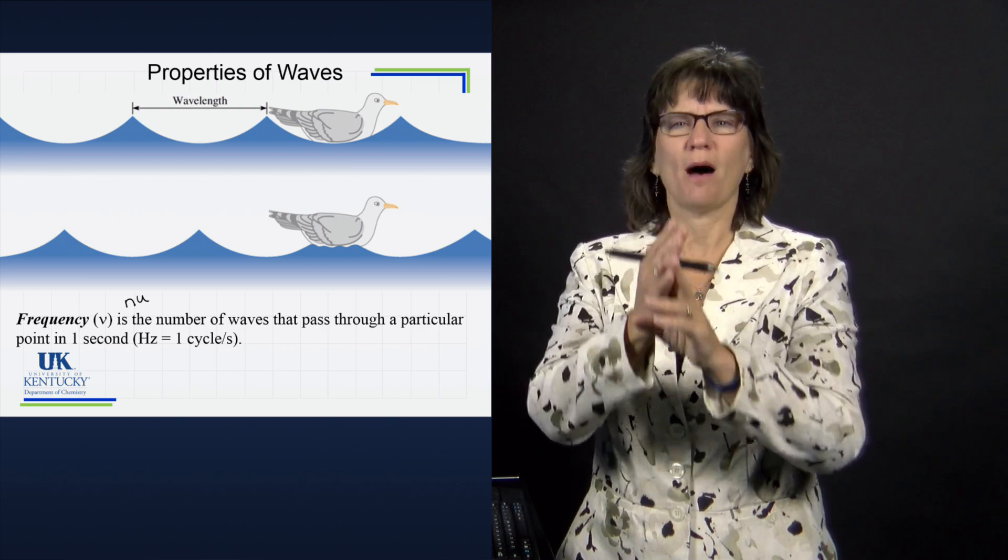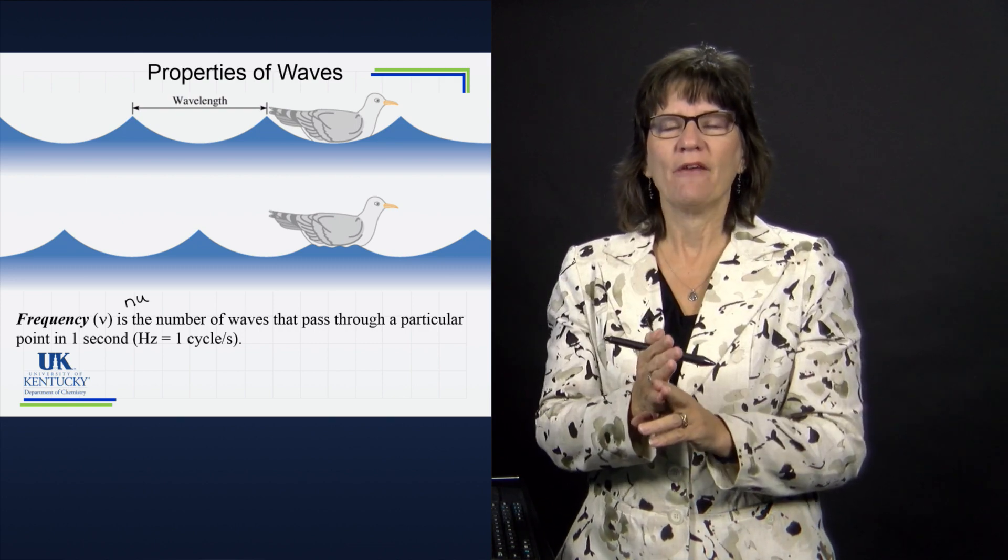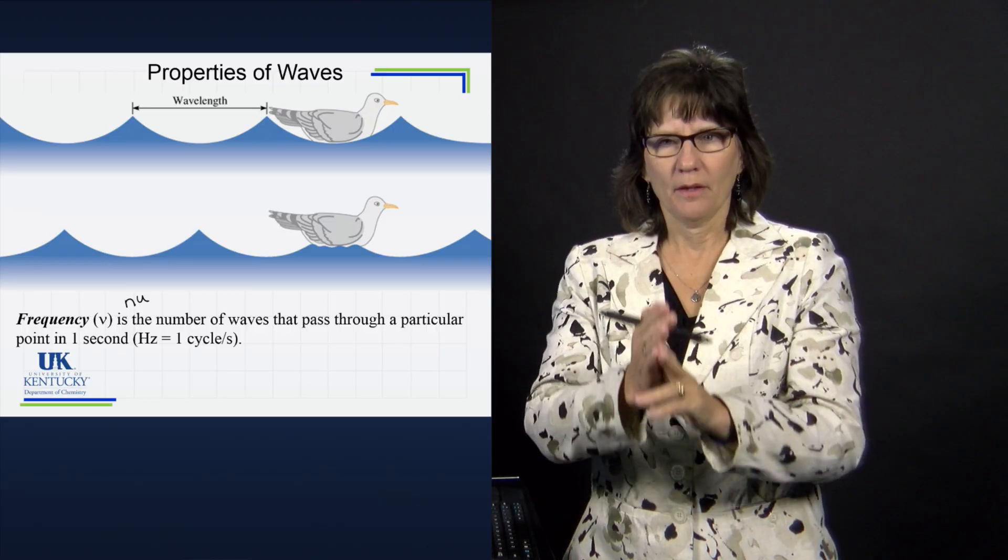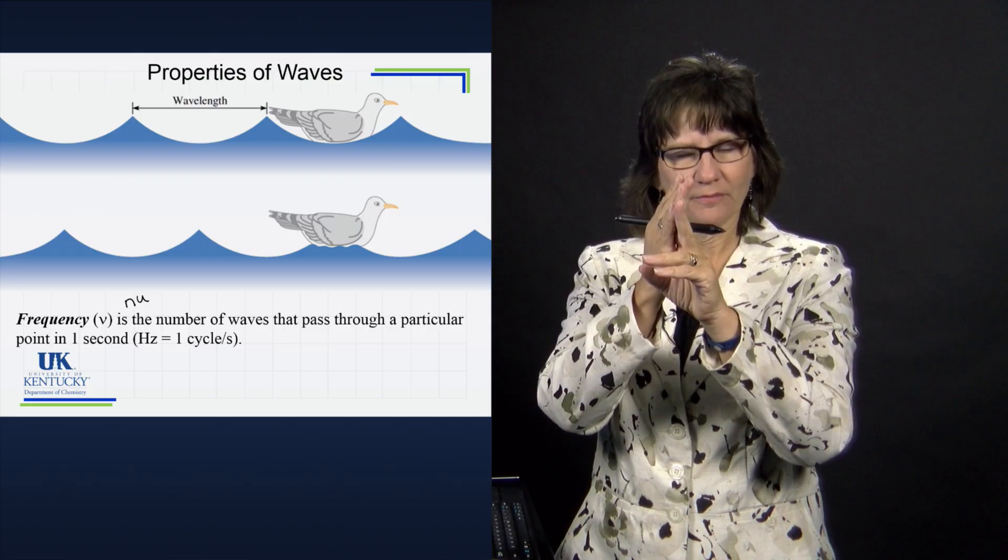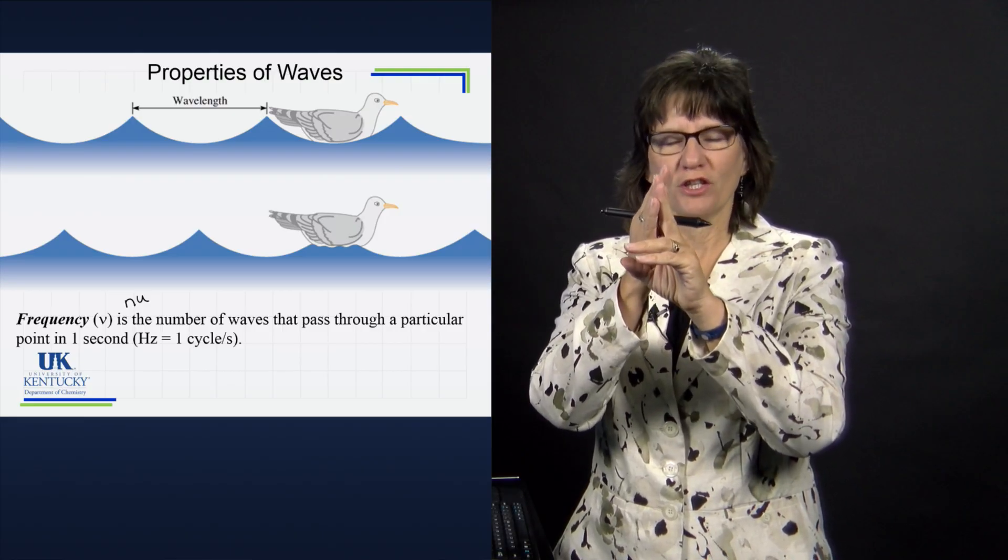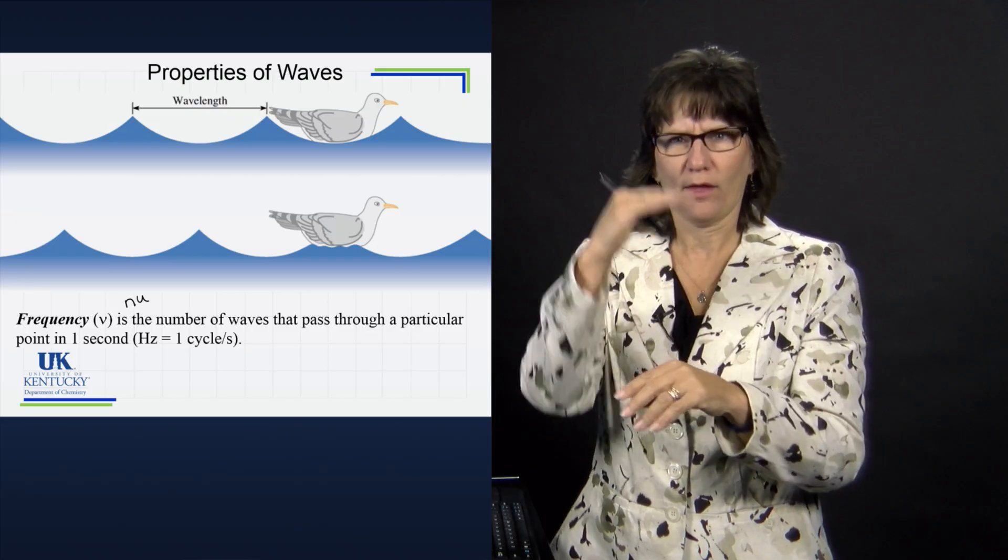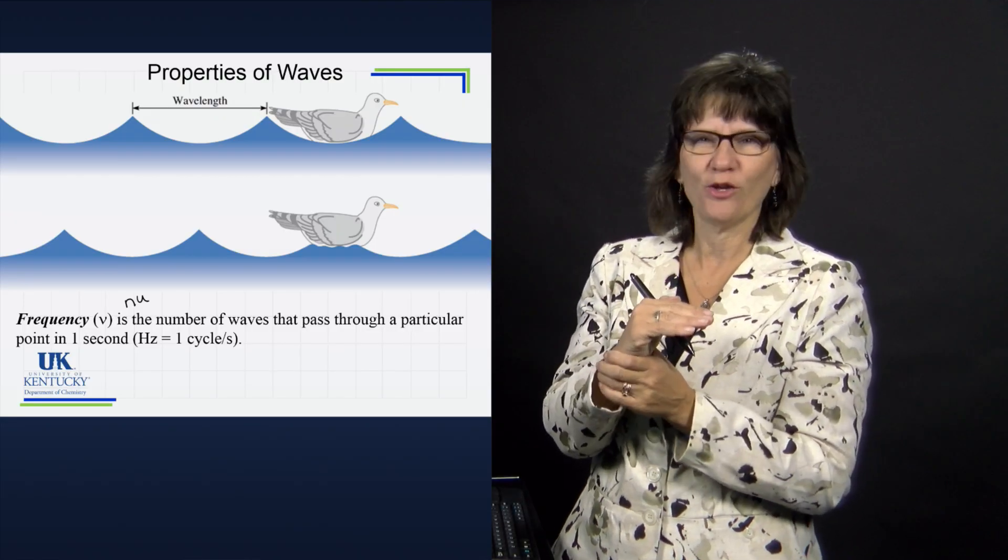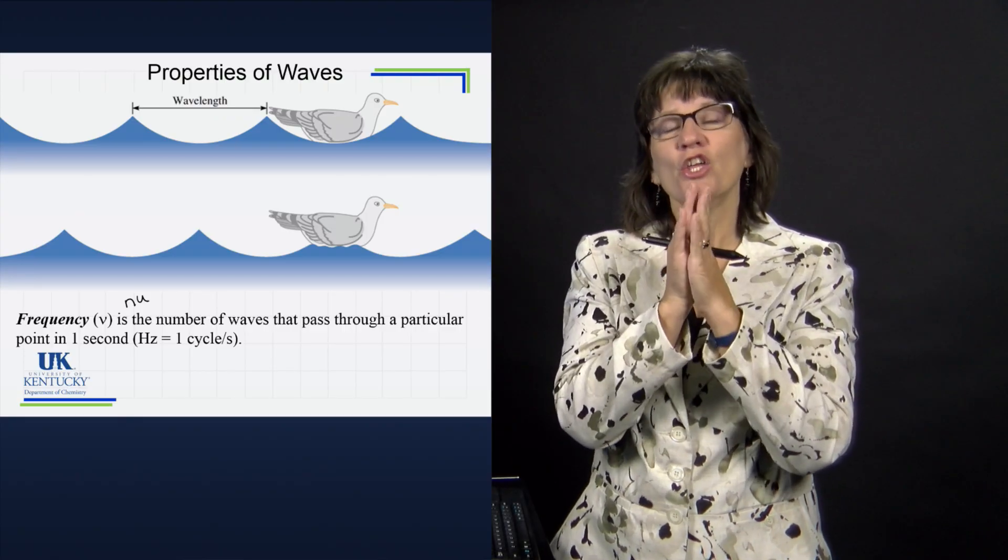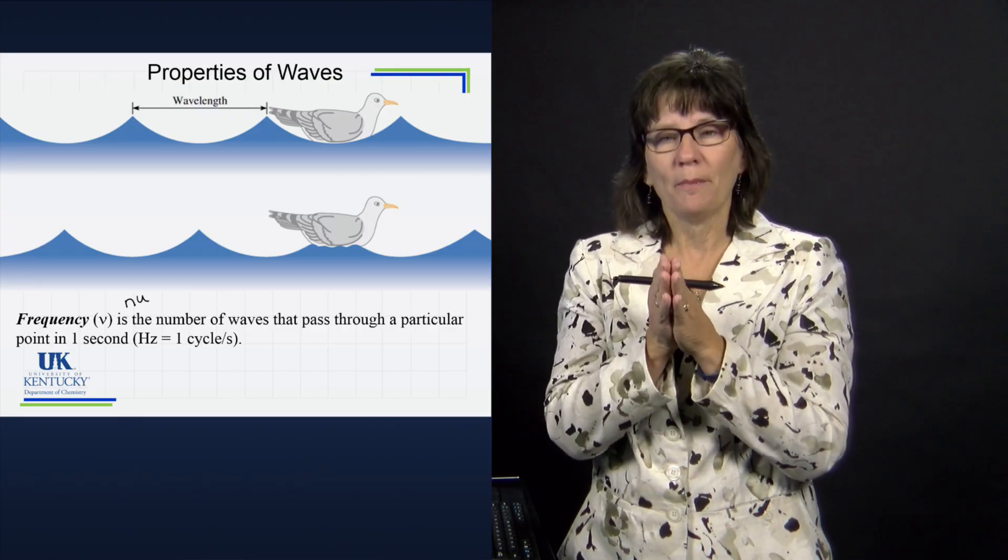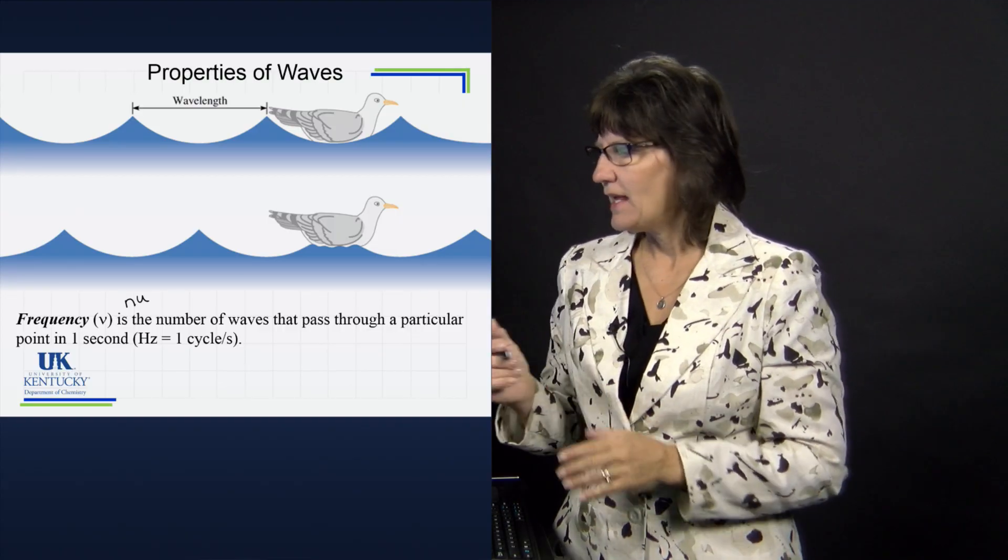If we watch that seagull sitting on the ocean, it's going to bob up and down. Every time it goes from up back to up is one cycle of that wave. If the waves are going by really fast and it bobs several times in a second, that poor little seagull will be bobbing up and down really fast.